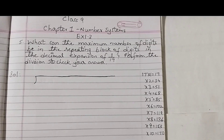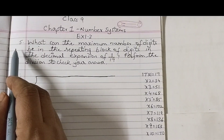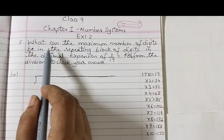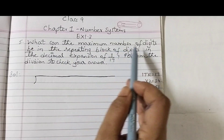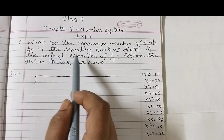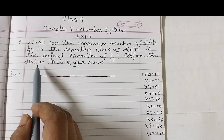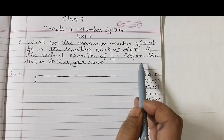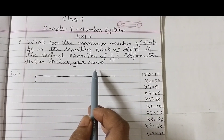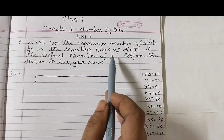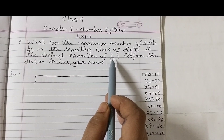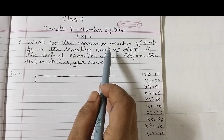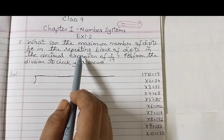Hello students. In today's video we shall discuss question number 5 of exercise 1.3, chapter 1, number systems. What can the maximum number of digits be in the repeating block of digits in the decimal expansion of 1 by 17? Perform the division to check your answer. So we need to perform the division of 1 over 17, and we need to find out the maximum number of digits which appears in the repeating block.